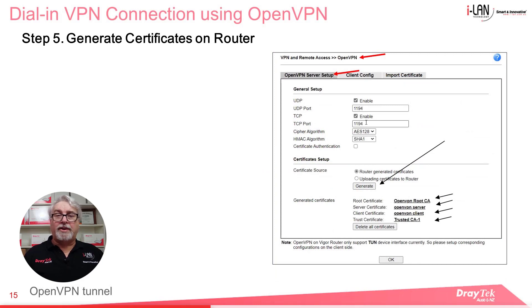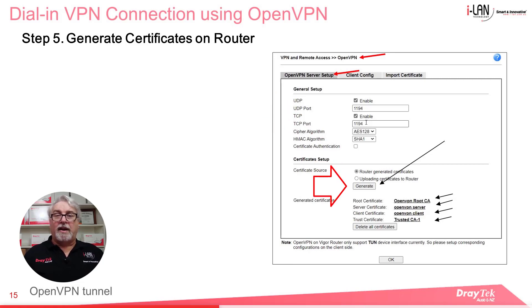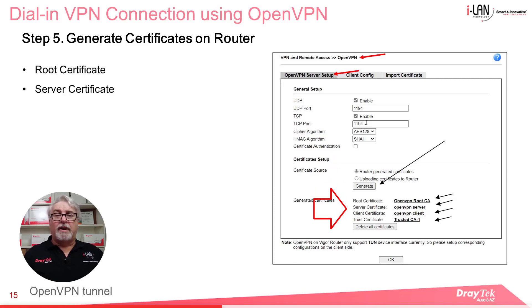Step 5 for router-generated certificates is to go to VPN and Remote Access, OpenVPN, and select the OpenVPN Server Setup tab. Check if the UDP port is the one you'd like to use — port 1194 comes up by default but you can change it. Then select Router-generated certificates and click the Generate button. That will generate four certificates: Root Certificate, Server Certificate, Client Certificate, and Trust Certificate.